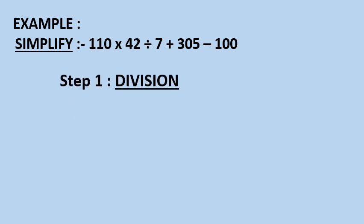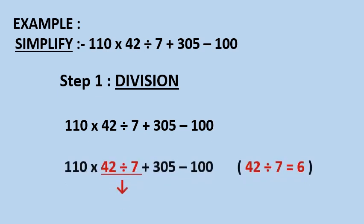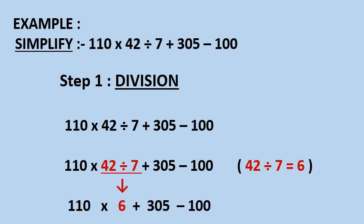To solve this question, the first step is division. The division sign is between 42 and 7. When we divide 42 by 7, the answer is 6. We write 6 in place of 42 divide by 7. Now the question is 110 multiply by 6 plus 305 minus 100.